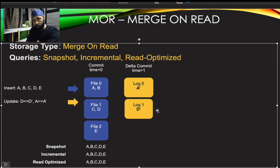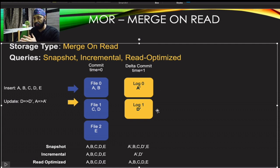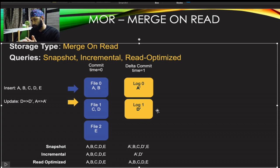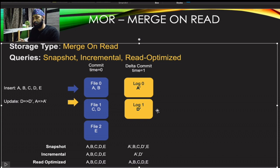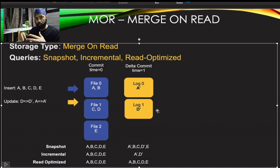While reading in Merge on Read, Hoodie merges the log file with the existing data file at read time to give you the latest information. A snapshot query returns the latest merged data; an incremental query returns what changed. But a read-optimized query still returns the old data — because it reads only from the compacted files and does not merge the log files. Read-optimized is for high-frequency read use cases where you accept slightly stale data in exchange for faster reads. The log files get merged into a new file only when compaction runs.